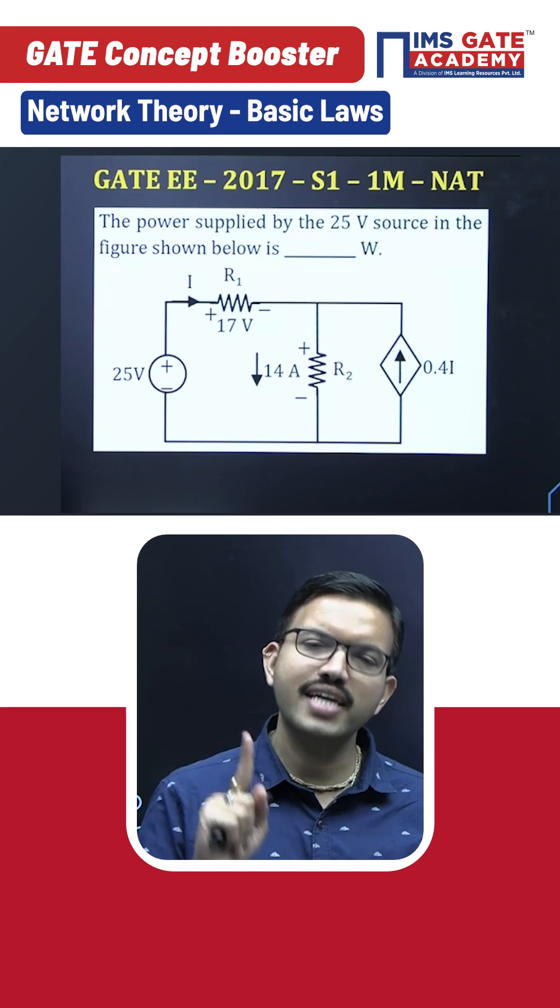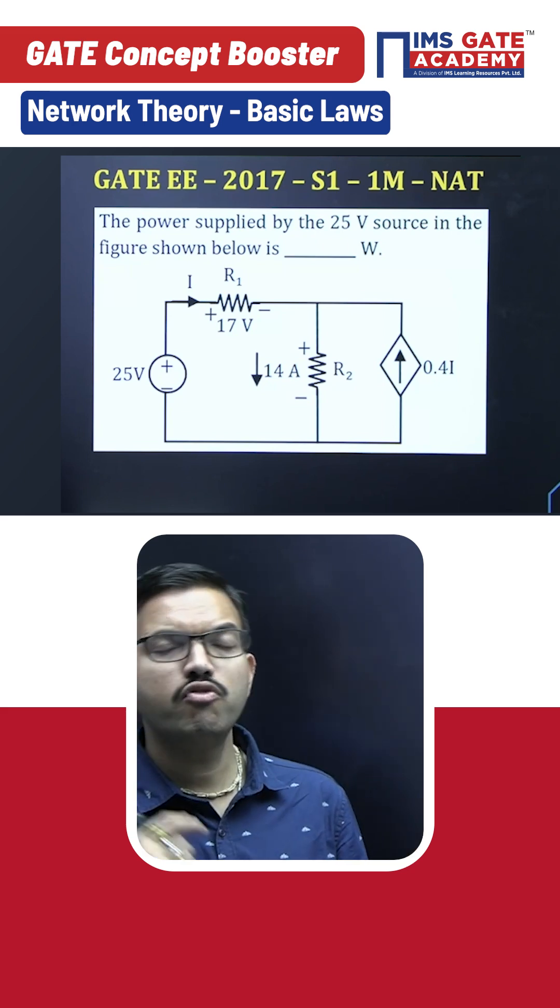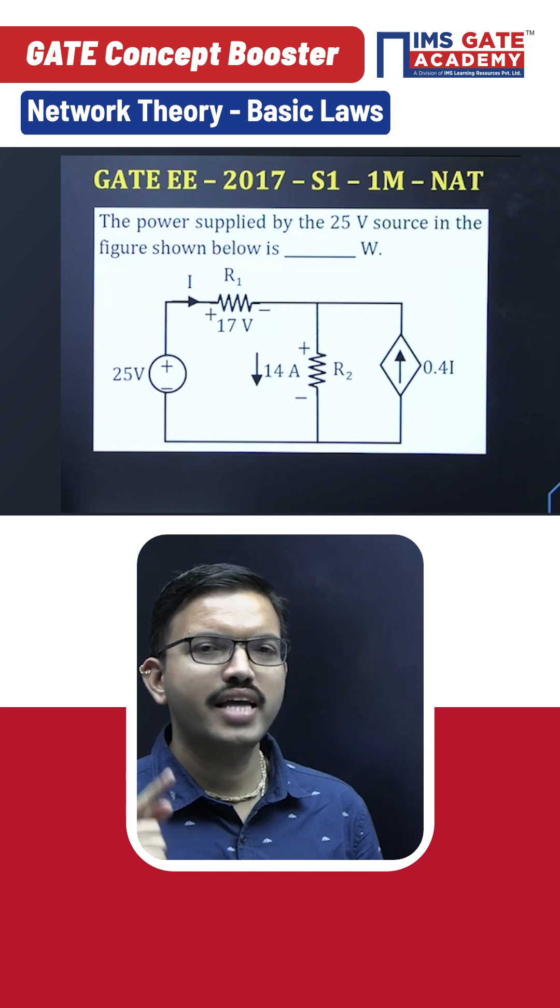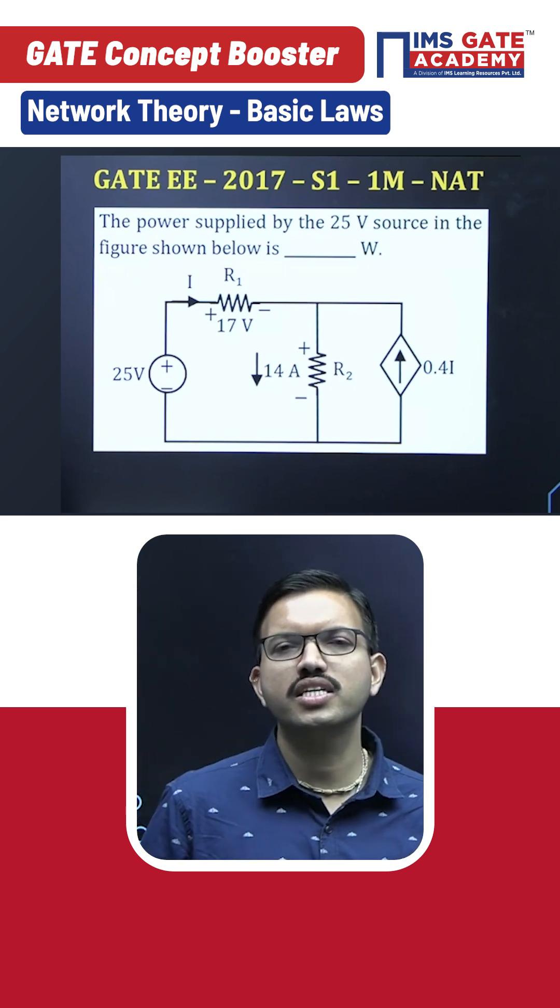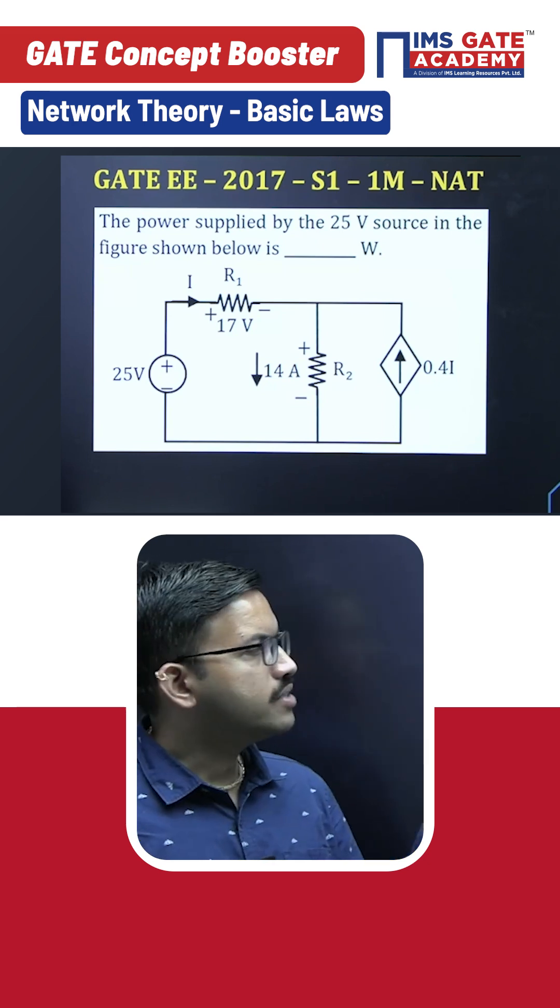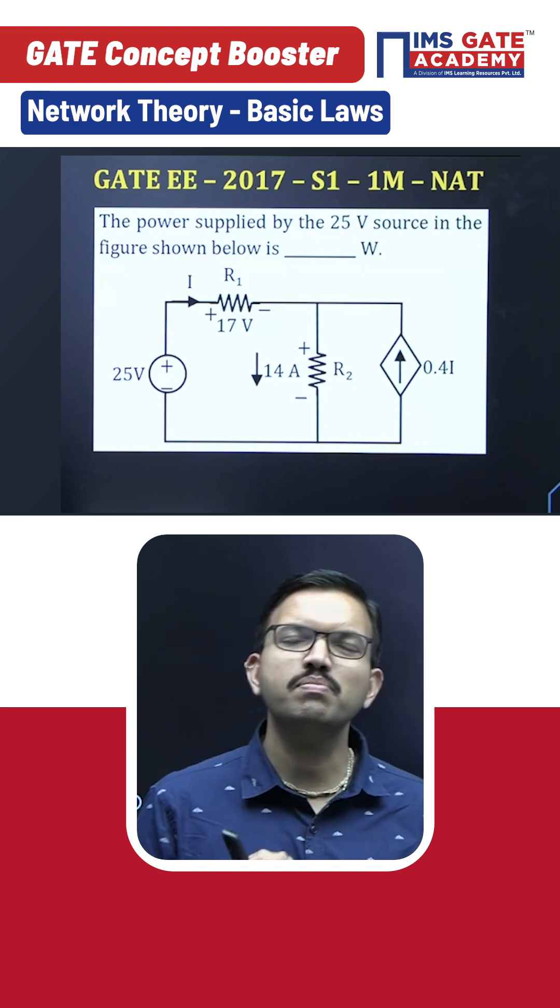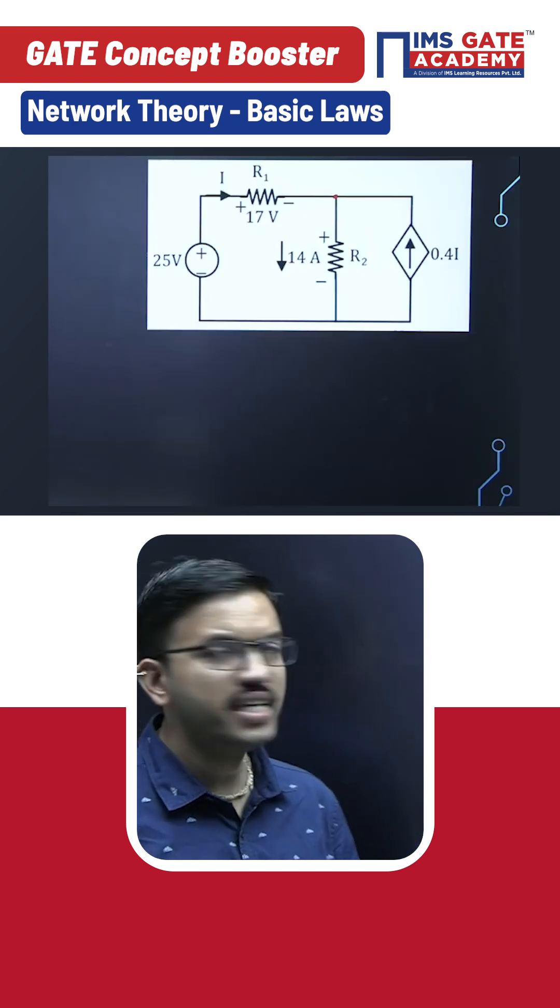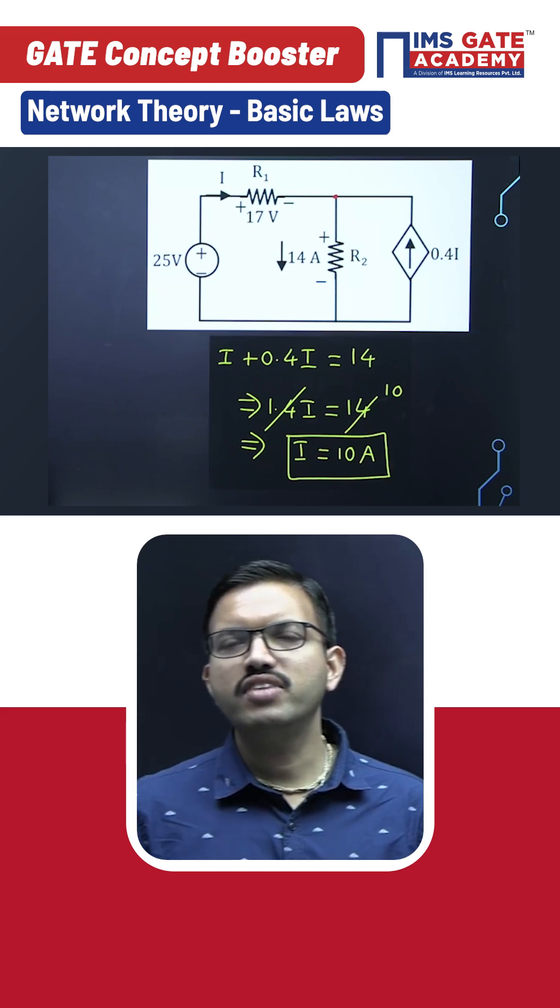Now just have an observation: which law can we apply as the first step for solving this particular question? Just observe - current i is entering and 0.4i is also entering, and 14 ampere is leaving. That means you can apply KCL. Sum of entering currents equals sum of leaving currents.